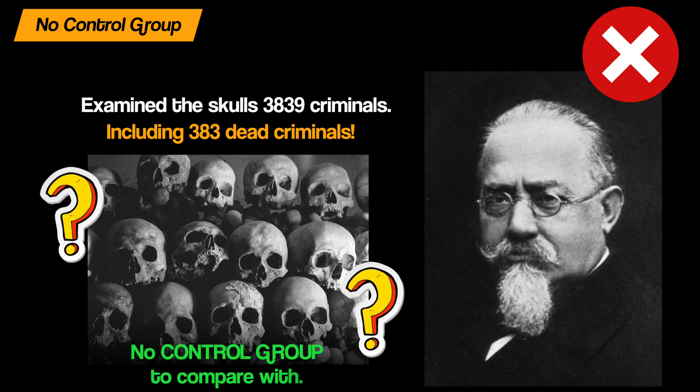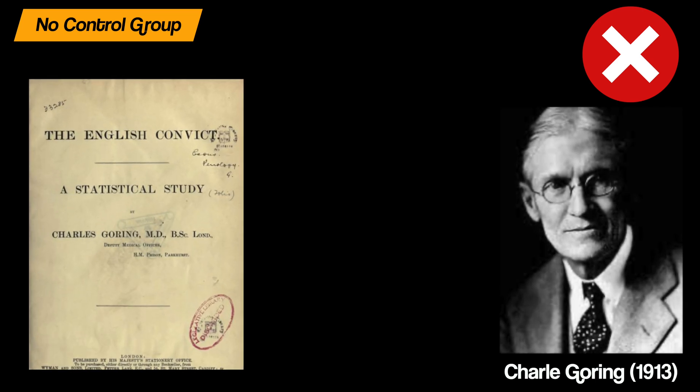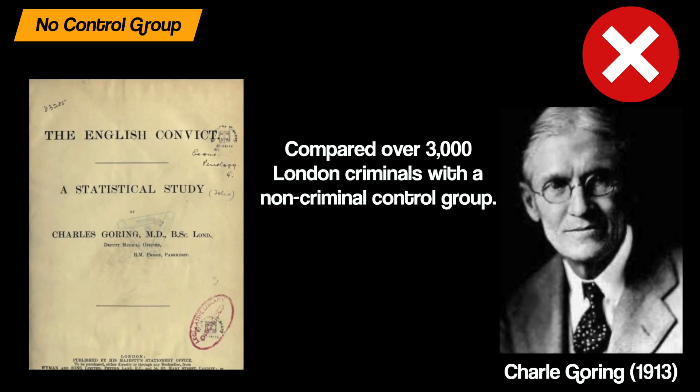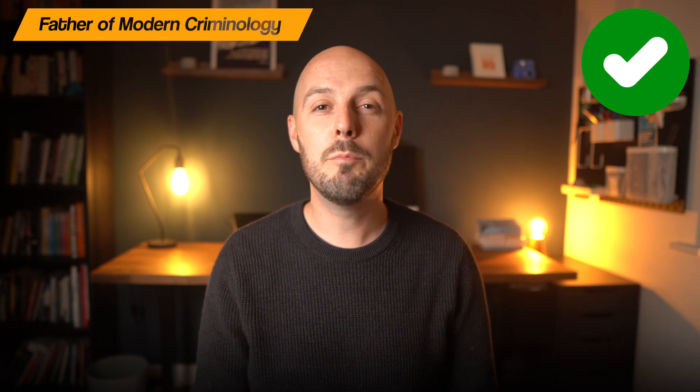Secondly, there was no control group. Lombroso found these physical defects in offenders but did not have a group of normal non-criminal people to compare them with. It could be that the physical defects he identified were not actually that abnormal from the average population. In fact, Goring in 1913 carried out a study comparing over 3,000 London criminals with a non-criminal control group and did not find evidence of an atavistic form in the criminal group — in other words, there was no difference between the two groups.